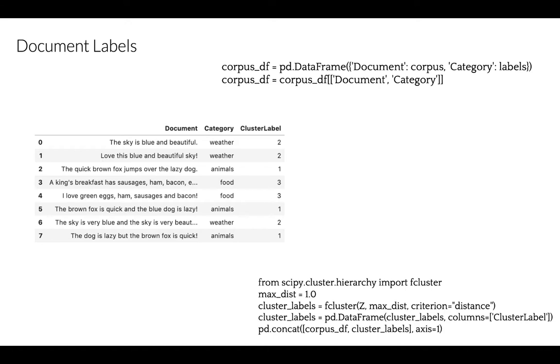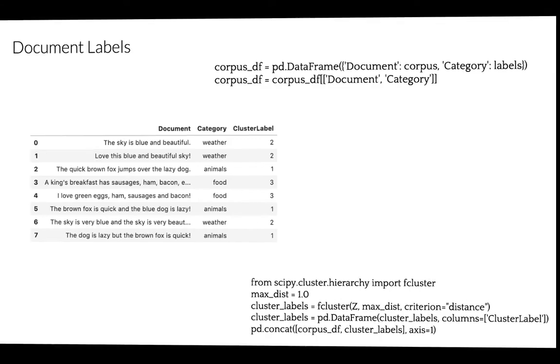And you notice we have our documents in the first column, document category, those are labels, and cluster label in the third column. This is a good pipeline in the future for clustering beyond documents, starting with document normalization, similarity matrix, and finally, hierarchical clustering.